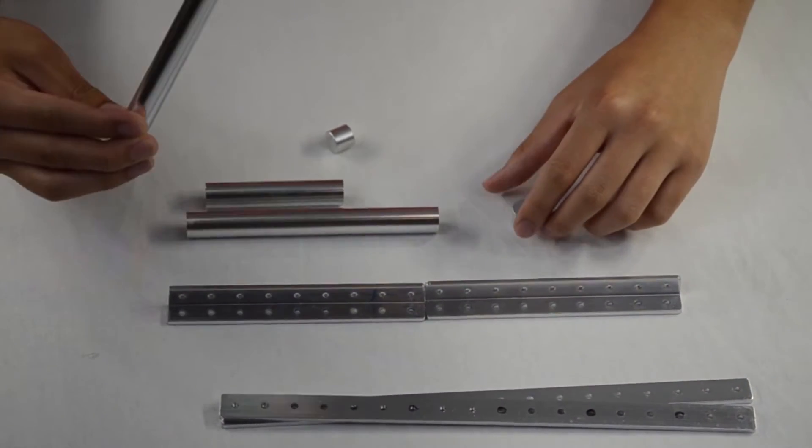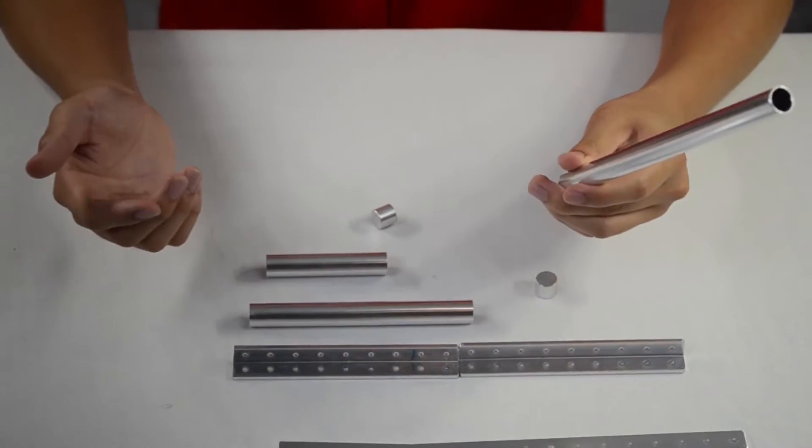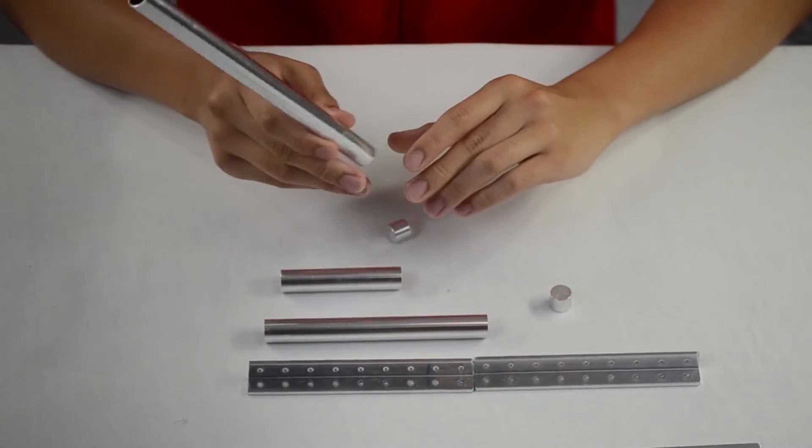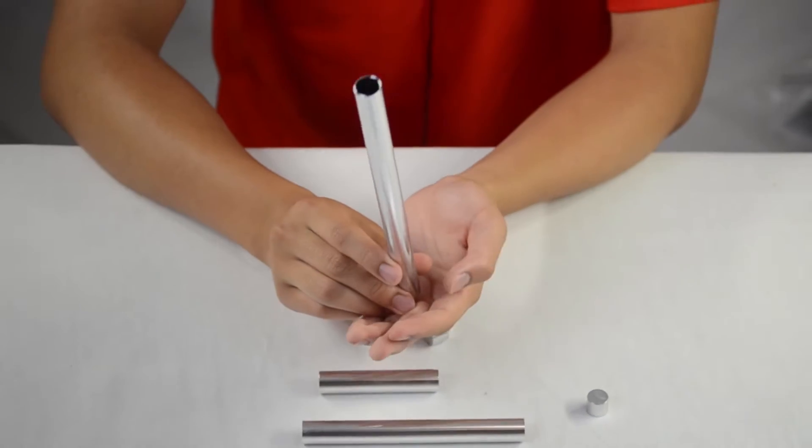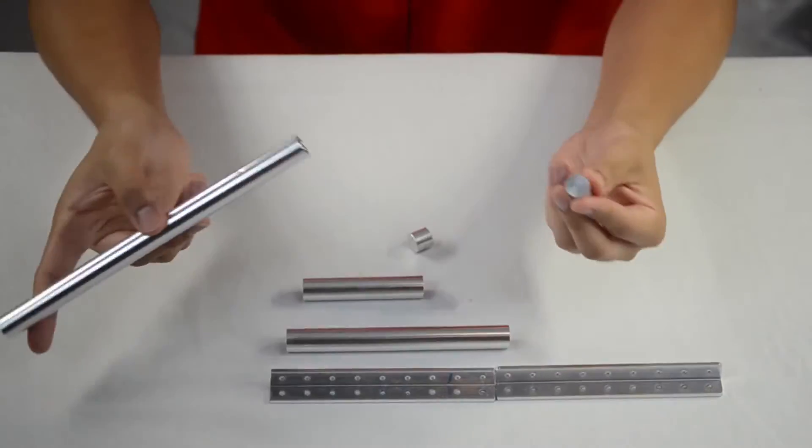And now moving on to the tubes. What they're good for are just like making flag holders or knocking over things by just putting it on an attachment and then swinging it forward so that it can knock over things.